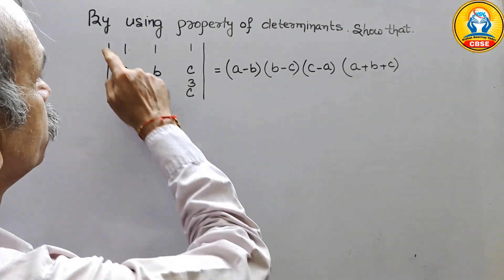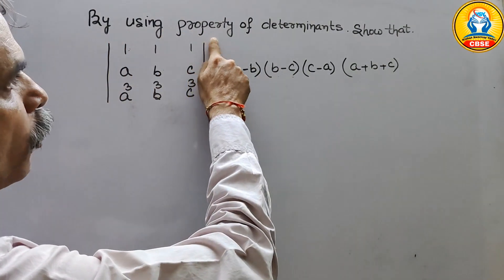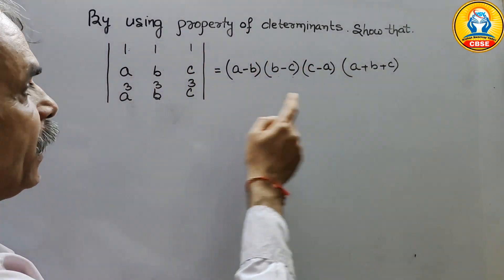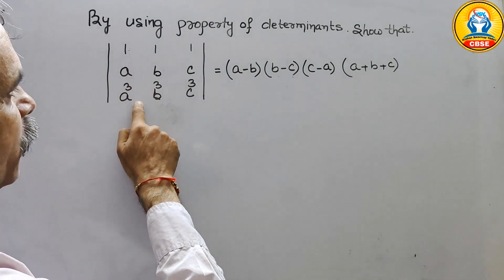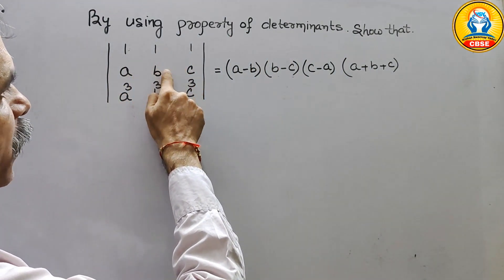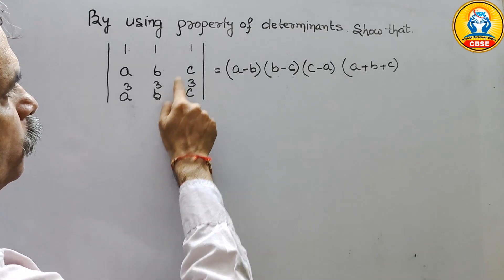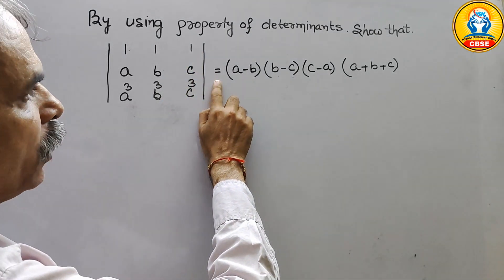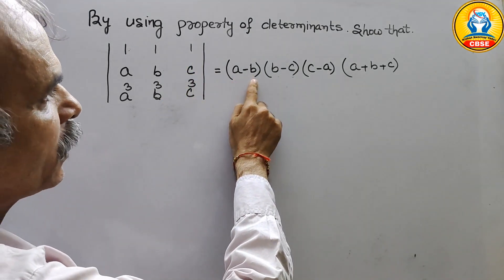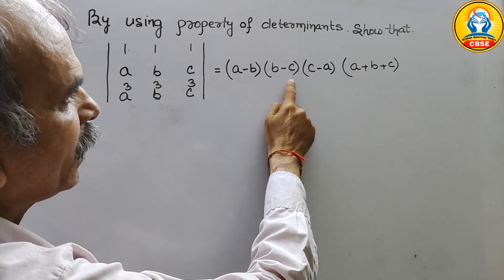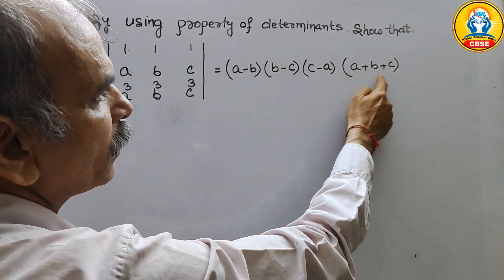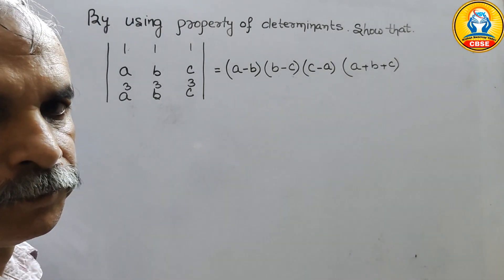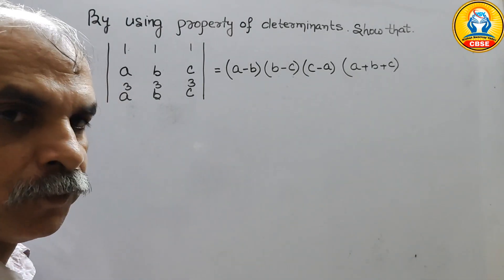The question is: using properties of determinants, show that |1, a, a³; 1, b, b³; 1, c, c³| is equal to (a minus b)(b minus c)(c minus a)(a plus b plus c). Let's see how we will solve it.